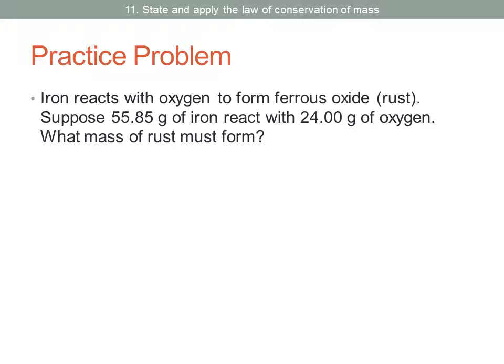Here's a practice problem. We're told that iron reacts with oxygen to form ferrous oxide or rust. Suppose 55.85 grams of iron react with 24.00 grams of oxygen. What mass of rust must form? So in this reaction, we have two reactants. We're told iron reacts with oxygen, so we just write iron plus oxygen. Notice we don't necessarily have to write the formulas or the symbols. We can just write the words. And then we only get one product here. That's rust.